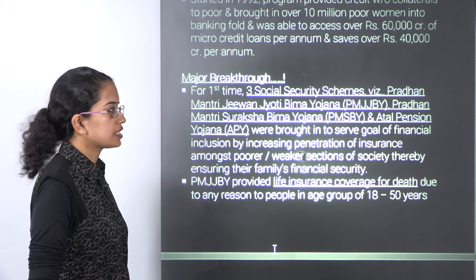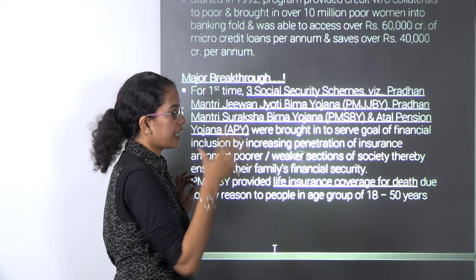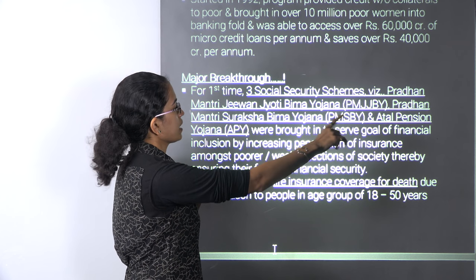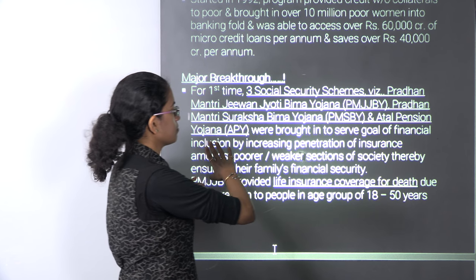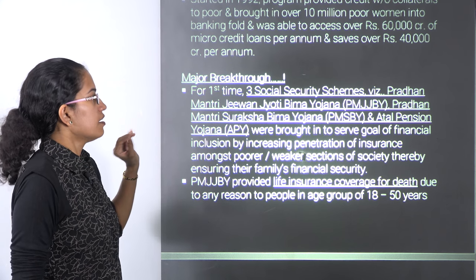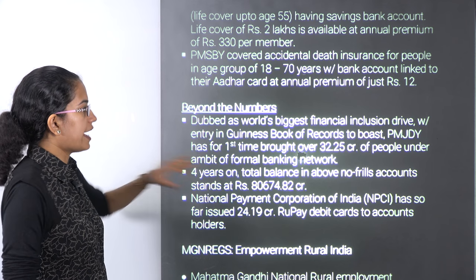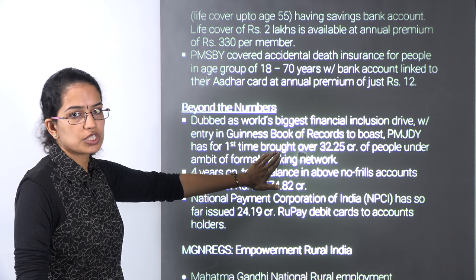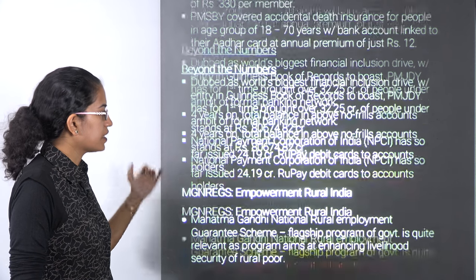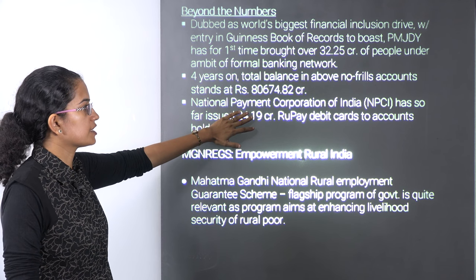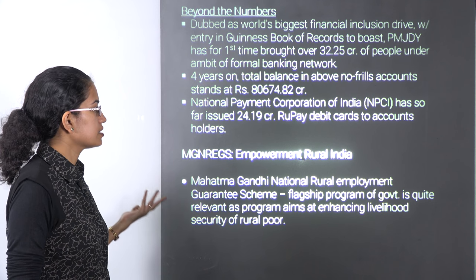We have three important social security schemes. Jeevan Jyoti Bima Yojana is for life insurance in case of death. Then there is Pradhan Mantri Suraksha Bima Yojana for accidental coverage, and Atal Pension Yojana for senior citizens. The Jan Dhan Yojana has been recorded in the Guinness Book of World Records, and the NPCI — National Payment Corporation of India — has issued nearly 24 crore rupee debit cards so far.